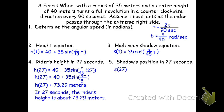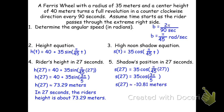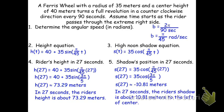For the shadow position, s(27) = 35·cos(π/45 × 27) = 35·cos(3π/5). Typing 35·cos(3π/5) into the calculator gives approximately −10.81 meters, which means the rider's shadow is 10.81 meters to the left of center.